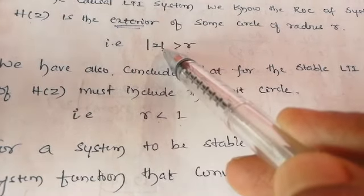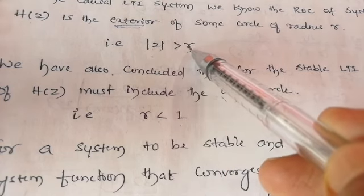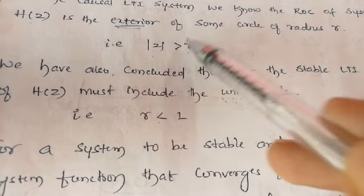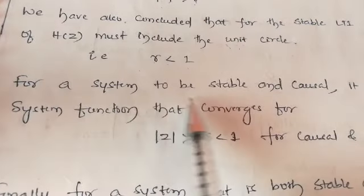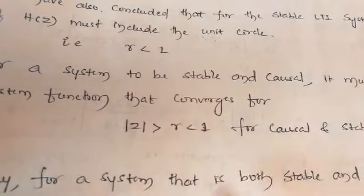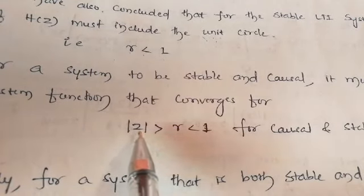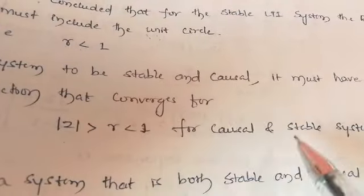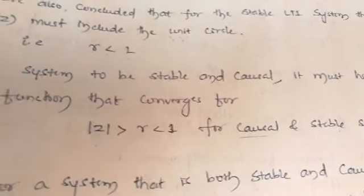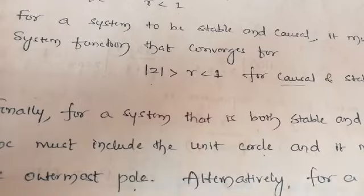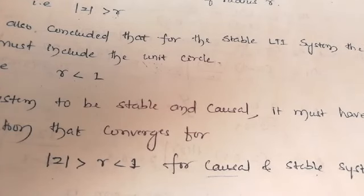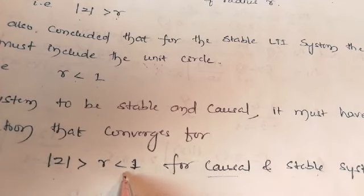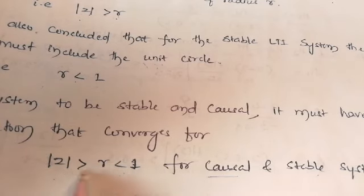So combining both cases: if the system is causal, the ROC lies exterior to the circle of radius R; and if the same system is stable, it must lie inside the circle of radius 1. For a system to be both stable and causal, it must satisfy |z| greater than R, with R less than 1. The ROC must include the unit circle and must be outside the circle of radius R.